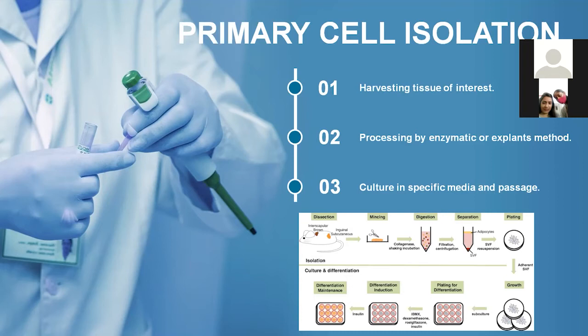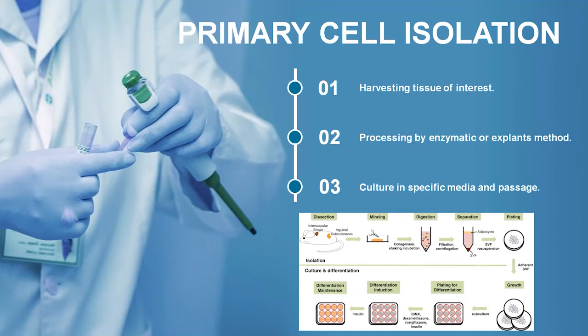The first step in primary cell isolation is harvesting the tissue of interest. As per regulatory authorities, it is very important to get the tissue after informed consent of the donor. The second step is processing by enzymatic or explant method. With the enzymatic method, we use different enzymes required for dissociating cell-to-cell contact, while the explant method allows cells to be directly isolated through crawling. Regulatory authorities have proposed it is preferable not to use the enzymatic method because enzymes can reduce receptor sensitivity. Most of the cells we isolate in our facility use the explant method.